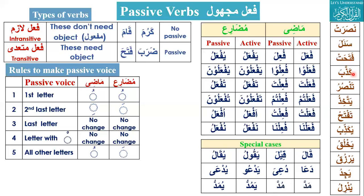Kazzaba means 'he denied' — its passive voice is kuzziba: first letter gets pesh, second letter gets kasra, last letter doesn't change. Tansuru means 'you help' — in mudari' passive, the second-last letter gets zabar, so it becomes tunsaru, meaning 'you are helped' or 'you will be helped.'